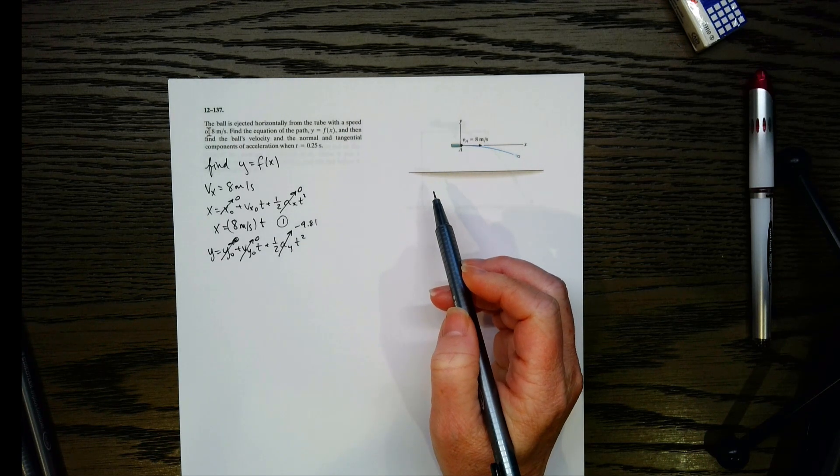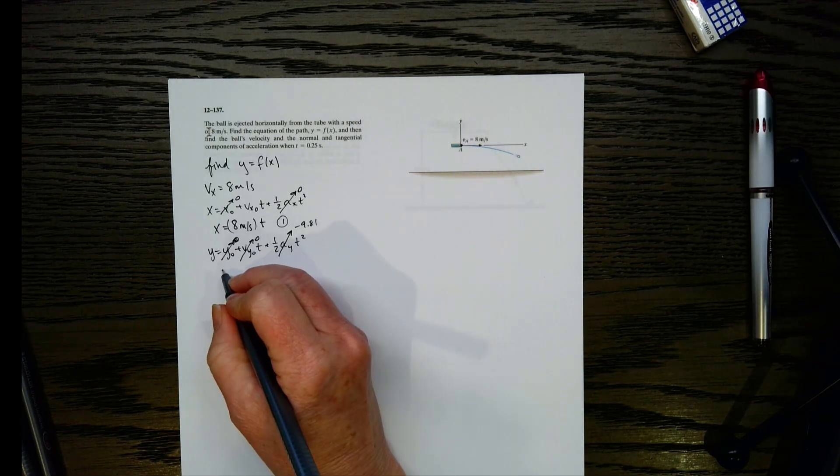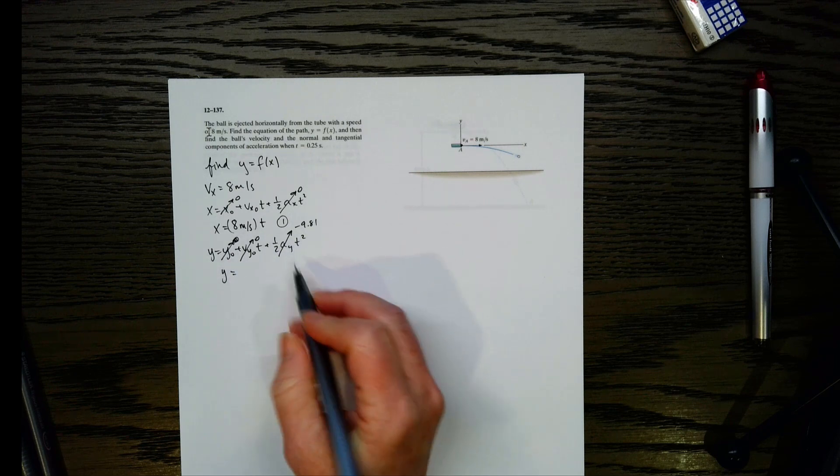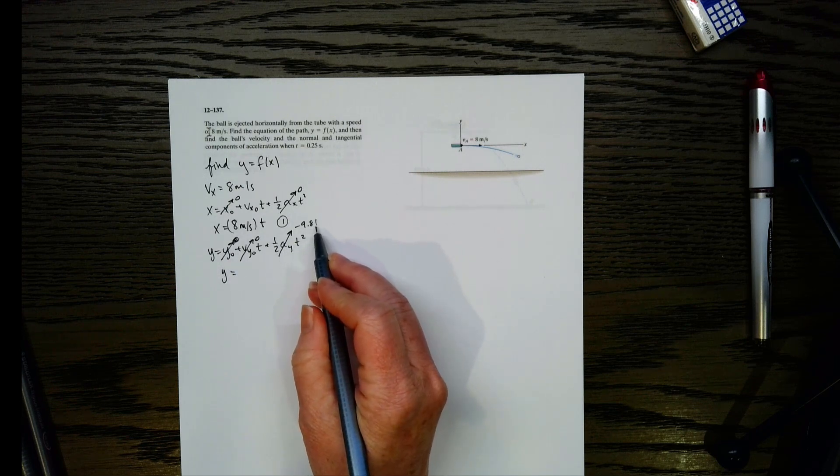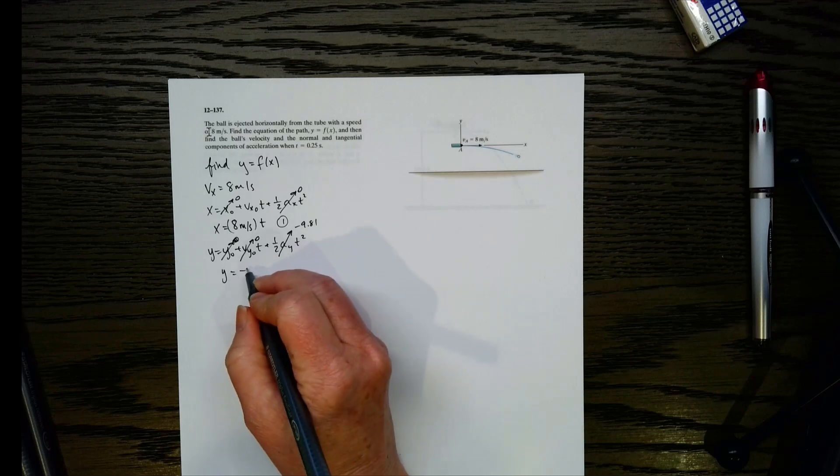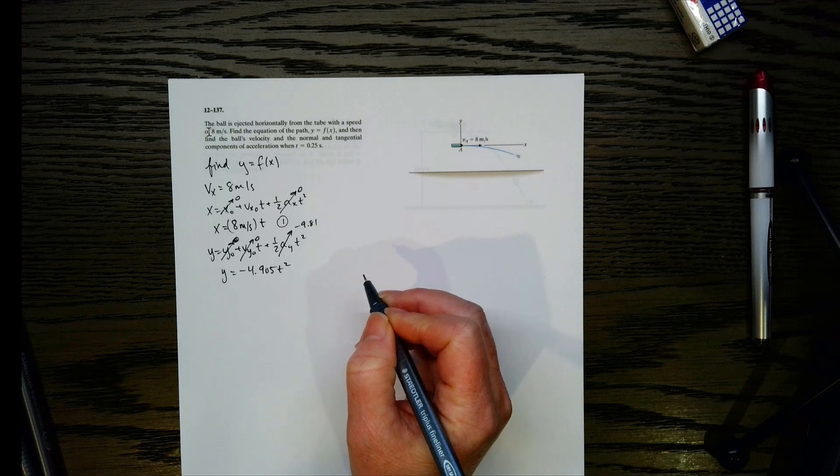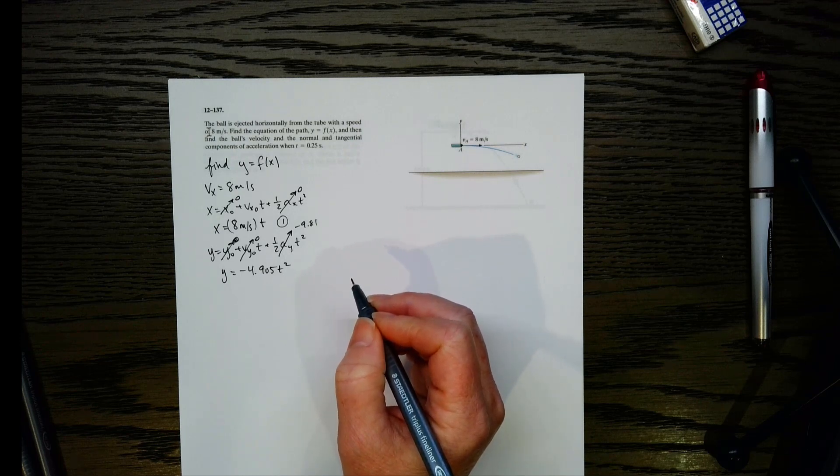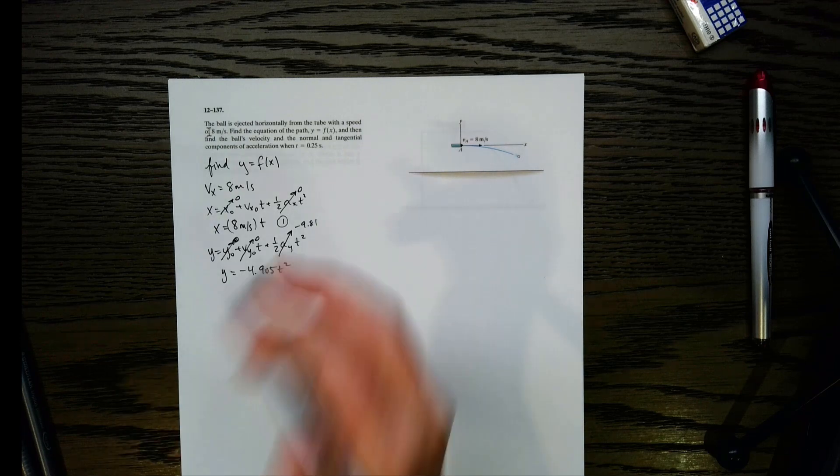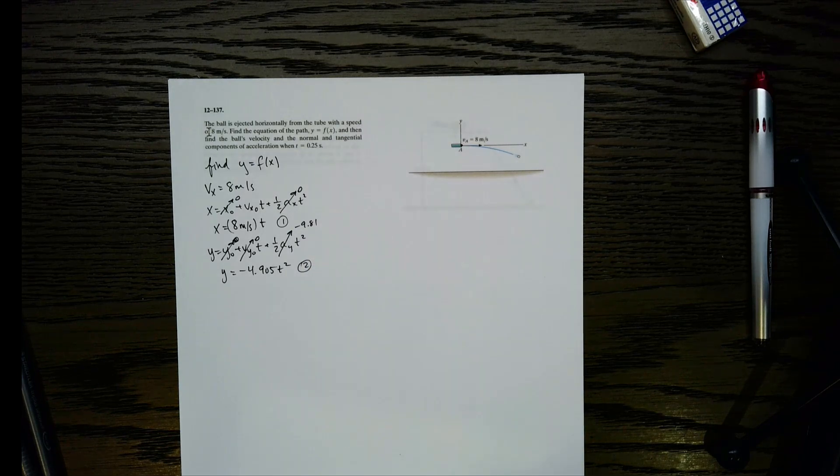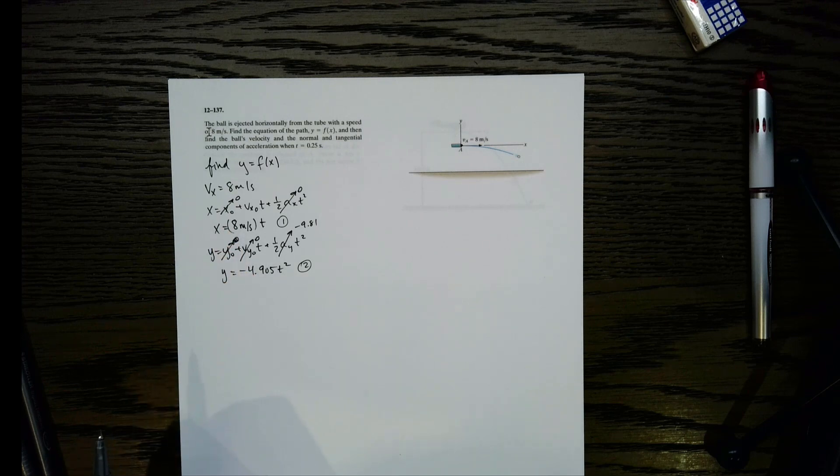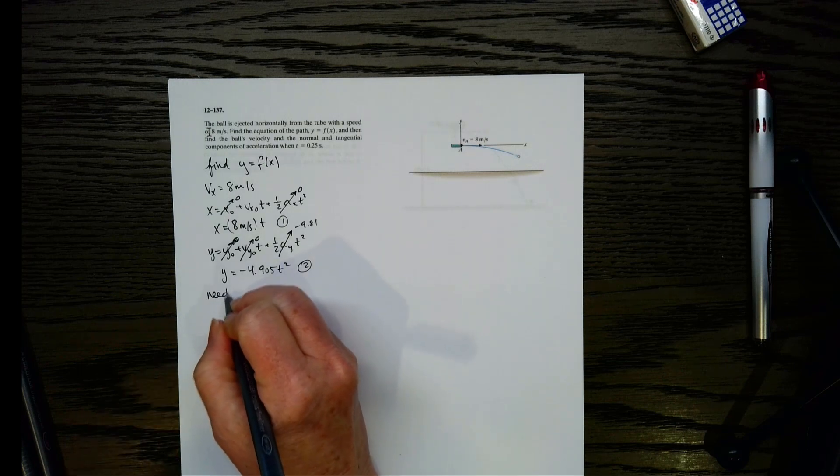So let's go ahead and make that negative 9.81. And then now let's put everything together. So y is going to be 1 half times negative 9.81 t squared, which ends up being y equals negative 4.905 t squared. Now let's call this equation 2. So looking at this, I've got two equations as a function of time. x and y, both as a function of time. So do you see a way where we could get y as a function of x? Because that's what we need.